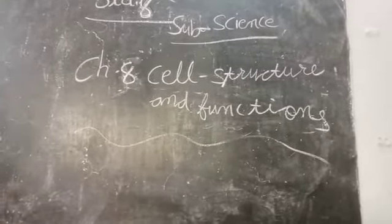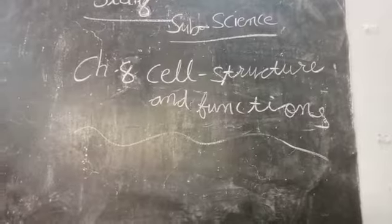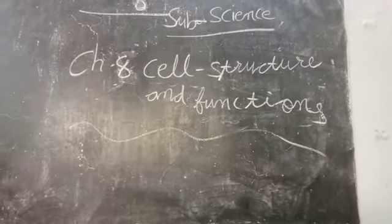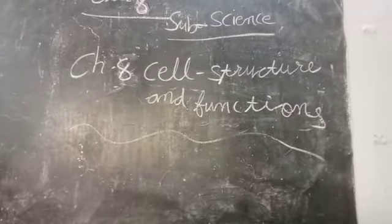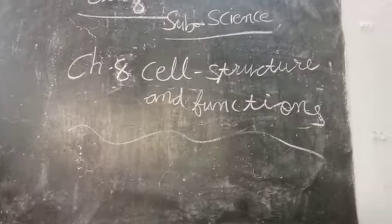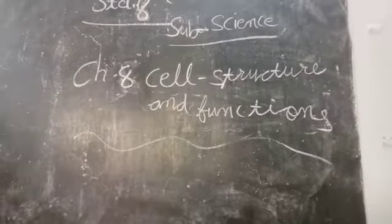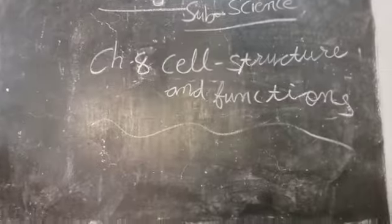The chromosomes are thread-like structures which can be seen only when the cell divides. Genes are units located on chromosomes.